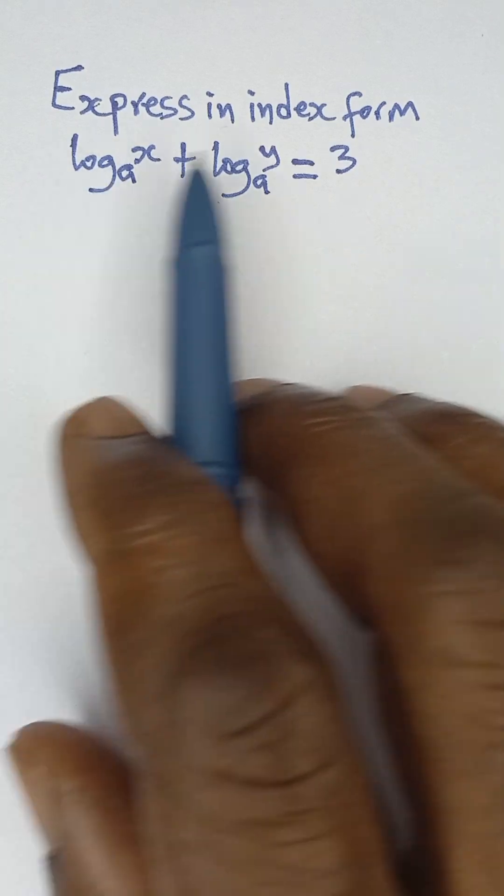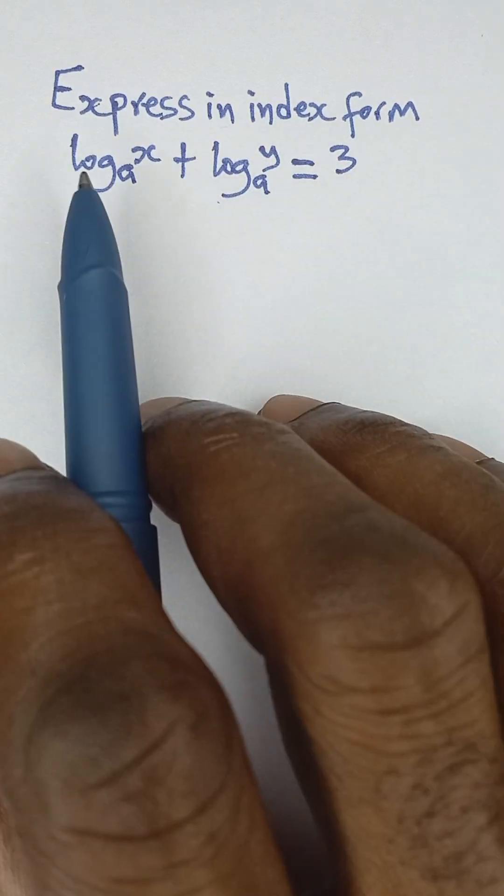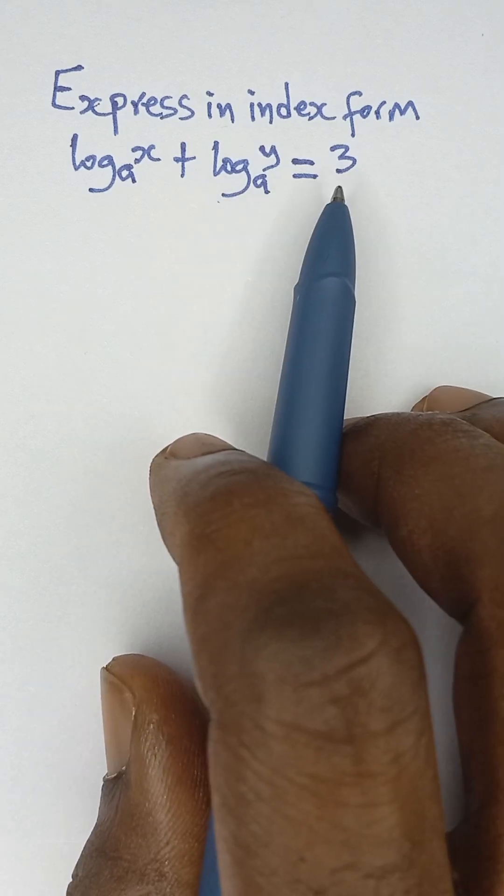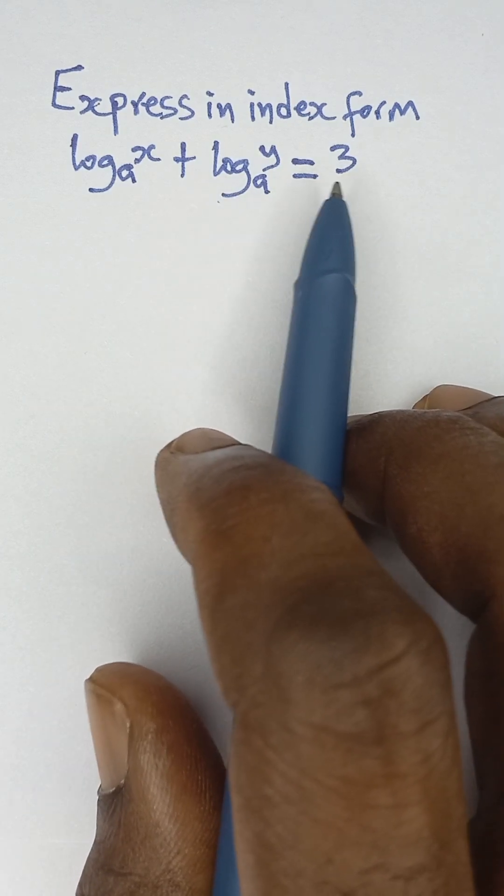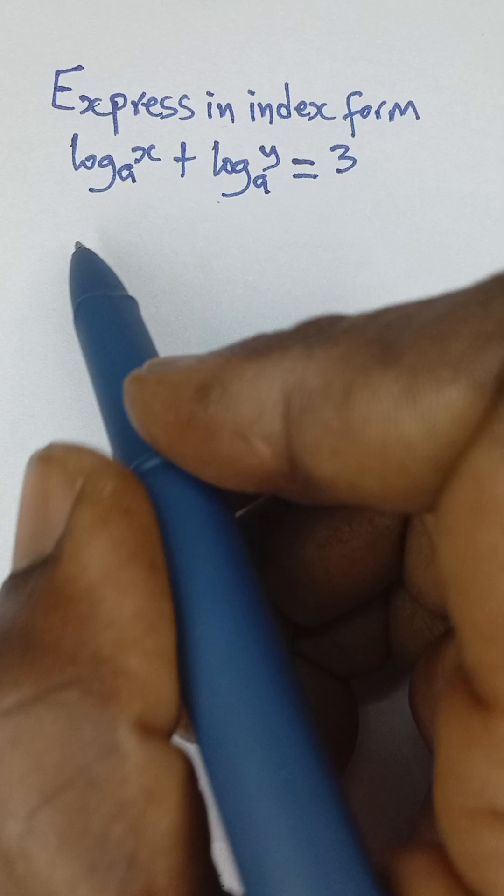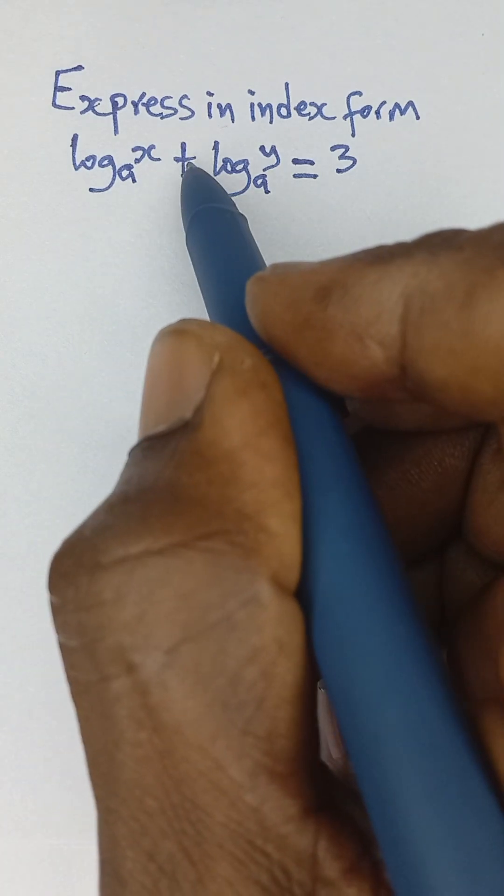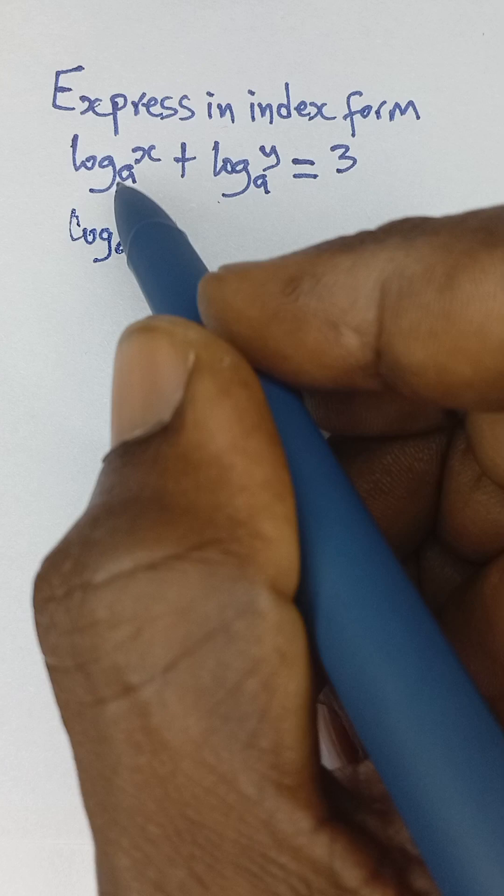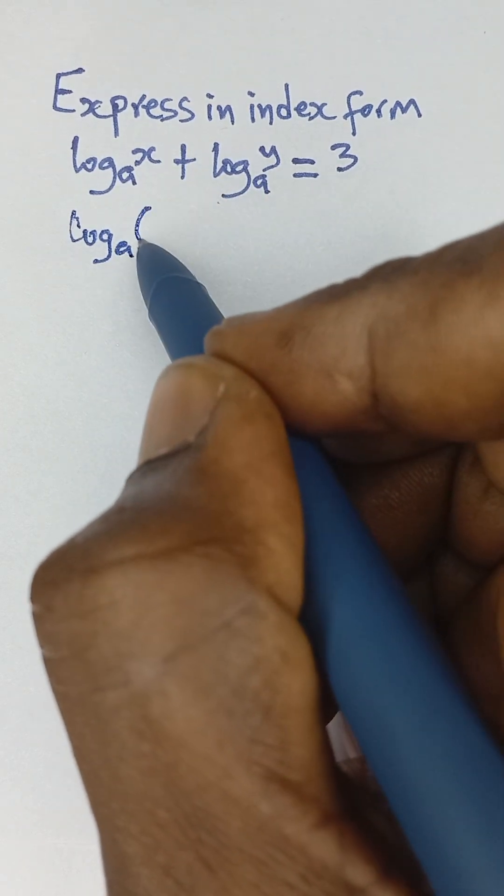The question here says express in index form log x to the base a plus log y to the base a is equal to three. Now according to the law of logarithm, because of this addition here, if we take log a which is common to the two terms here and open up brackets.